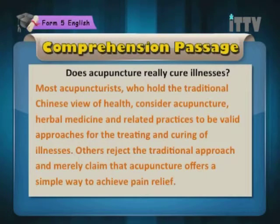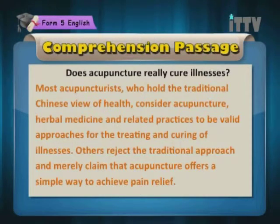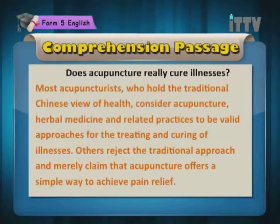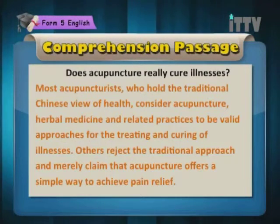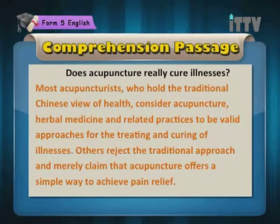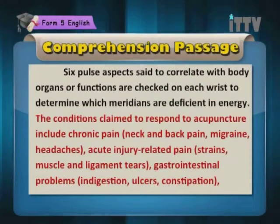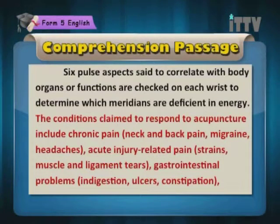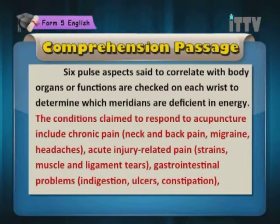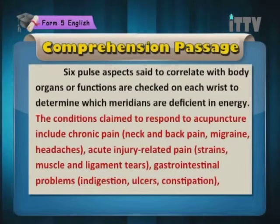Does acupuncture really cure illnesses? Most acupuncturists who hold the traditional Chinese view of health consider acupuncture, herbal medicine and related practices to be valid approaches for the treating and curing of illnesses. Others reject the traditional approach and merely claim that acupuncture offers a simple way to achieve pain relief. Six pulse aspects said to correlate with body organs or functions are checked on each wrist to determine which meridians are deficient in energy. The conditions claimed to respond to acupuncture include chronic pain, neck and back pain, migraine, headaches, and acute injury related pain.